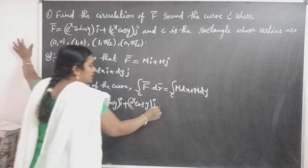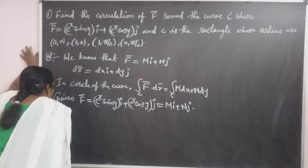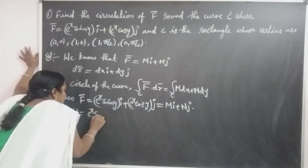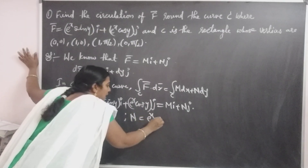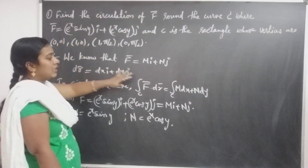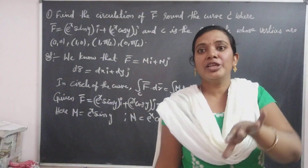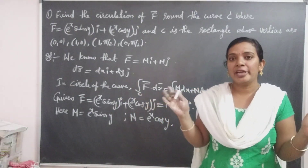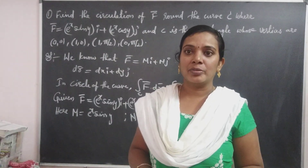Clearly, comparing with Mi plus Nj, here M is equal to e to the power x sin y, and N is equal to e to the power x cos y. In this case, if the line integral is bounded in the rectangular shape — that is, in the region capital R in the xy-plane — what is the relation between the line integral and the double integral? That is suitable in Green's Theorem.